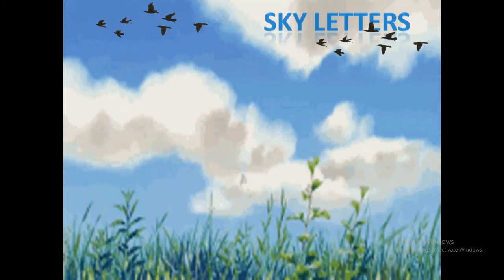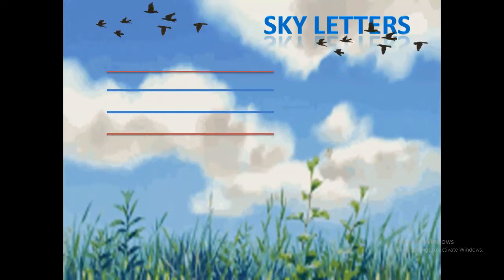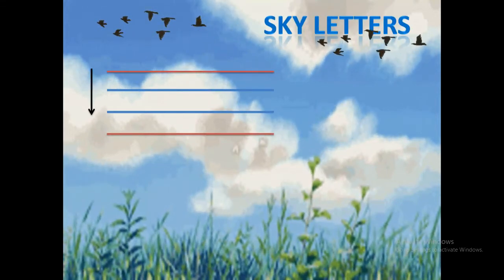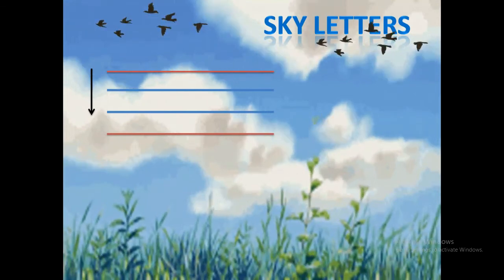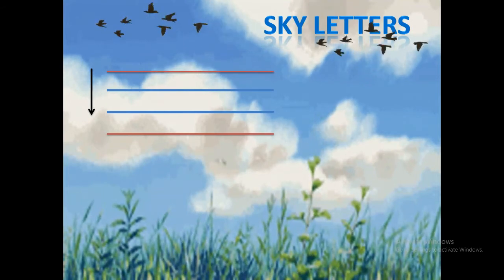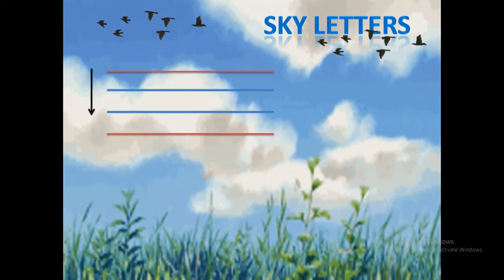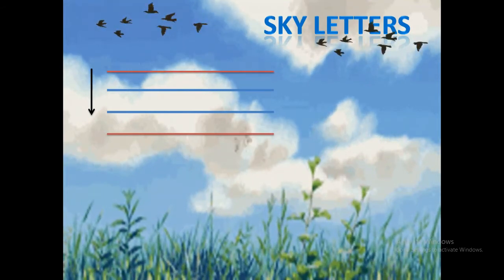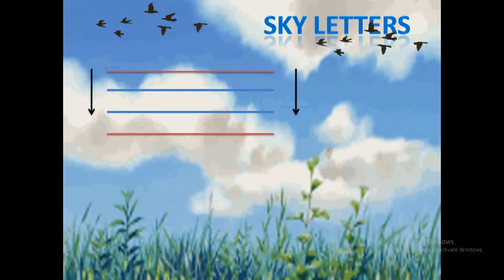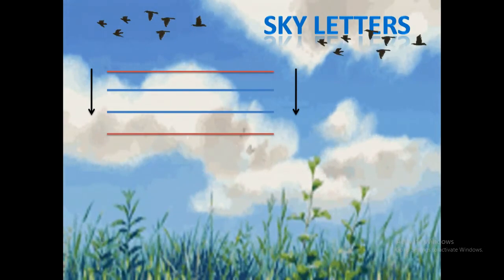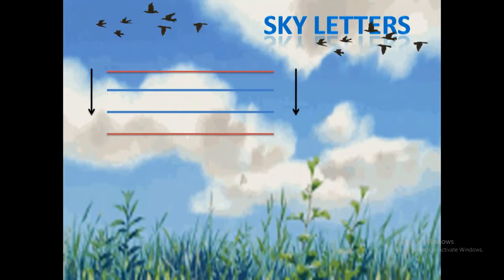Now, see the place and position of sky letters. They are written in the top three lines, which means they include the top red line and the two middle lines. Sky letters begin at the top red line and end on the second blue line. These letters don't touch the bottom red line.